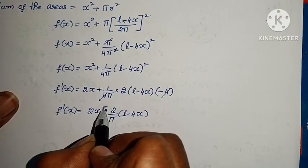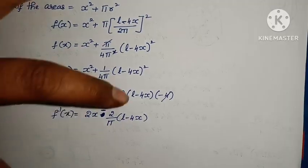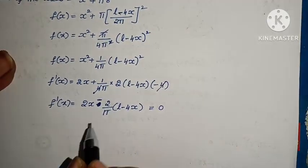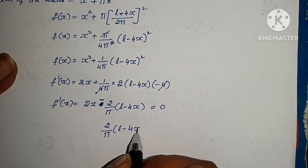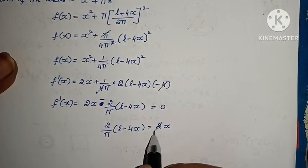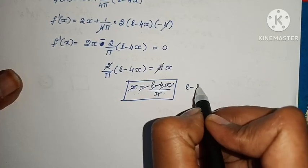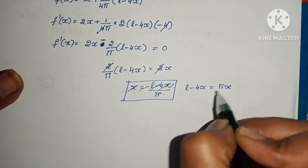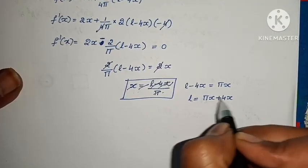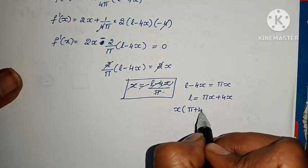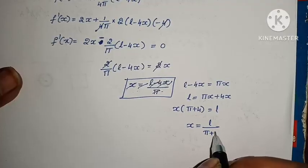Differentiating f(x): f'(x) = 2x + (2/π)(L - 4x) × (−4) / 2 = 2x - (2/π)(L - 4x). Setting f'(x) = 0: 2x = (2/π)(L - 4x). Cancelling 2 and multiplying by π: πx = L - 4x. So L = πx + 4x = (π + 4)x, giving x = L / (π + 4).